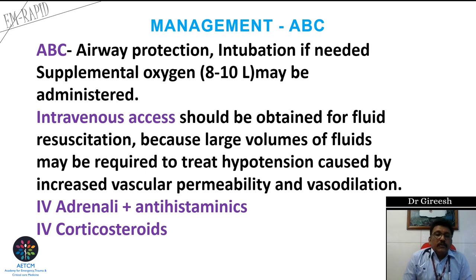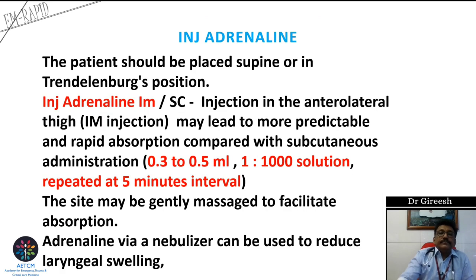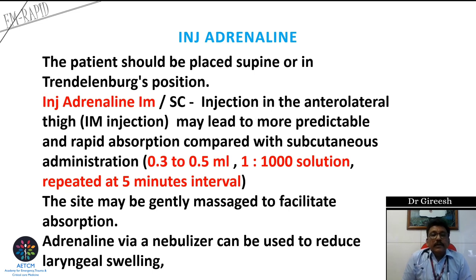Treatment primarily involves IV adrenaline, IV antihistamines (H1 and H2 blockers), and corticosteroids. Adrenaline is the drug of choice and can be given IM or subcutaneous at 0.3 to 0.5 ml of 1 in 1000 solution. The patient should be kept supine; Trendelenburg position can be tried initially. Adrenaline must be given as soon as possible when anaphylaxis features appear, and can be repeated.